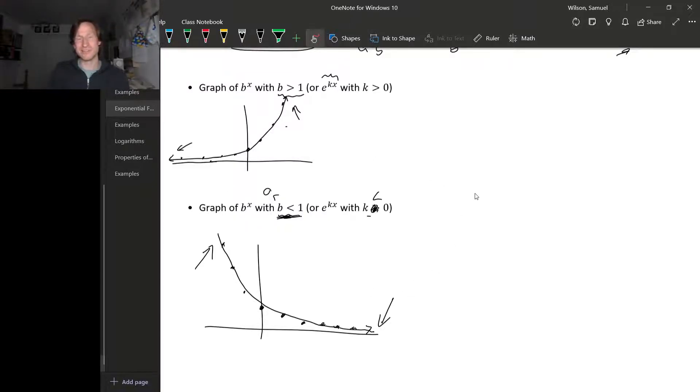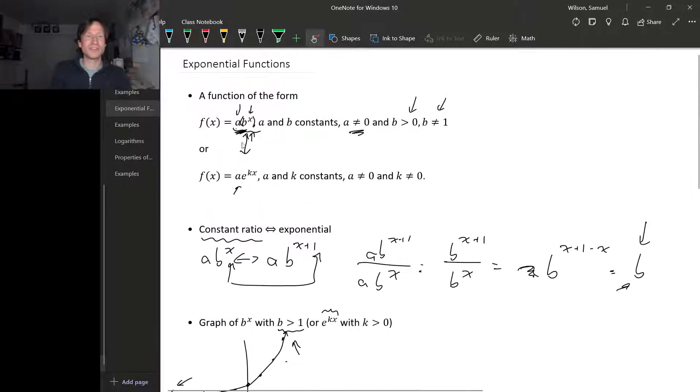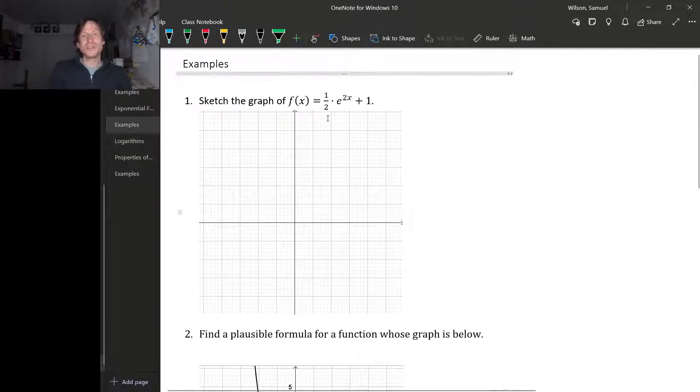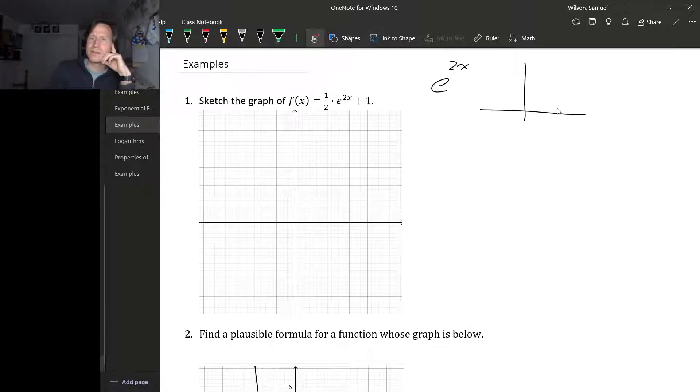Let's look at some examples of using these basics about exponential functions. First, let's sketch the graph of this function: 1/2 times e to the 2x plus 1. To start with, we should look at e to the 2x. Since this k value here is positive, e to the 2x is going to be exponential growth.